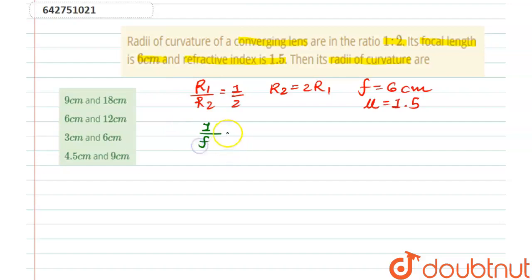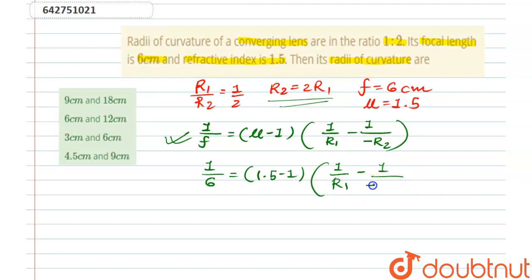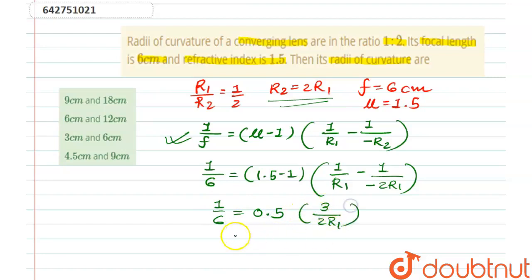1 by f is equal to (μ − 1) times (1/r1 minus 1/(−r2)). Substituting all values: f is 6, μ is 1.5, so (1.5 − 1) = 0.5. Since r2 = 2r1, we get 1/6 = 0.5 × (3 / 2r1), which gives r1 equal to 4.5 centimeters.